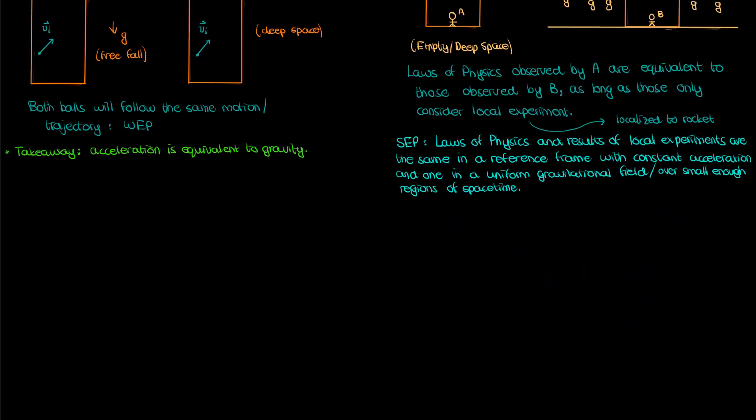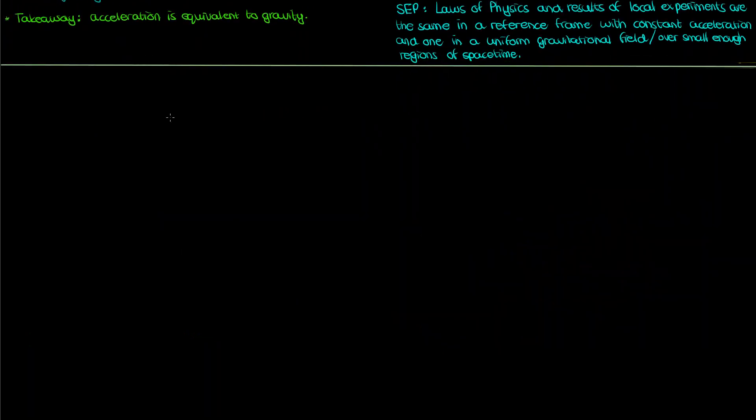Let's now apply the equivalence principle, particularly the strong equivalence principle, to describe what happens to a ray of light in a gravitational field. Now because of the equivalence principle if we want to know the path of a ray of light in a uniform gravitational field we just need to examine the path of the ray of light in an equivalent accelerating reference frame which I'll call gamma 1.